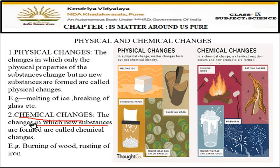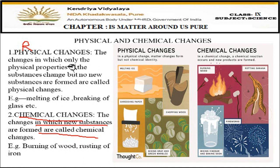Chemical changes are those in which a new substance is formed. Physical changes are generally reversible - we can get back the original substance. For example, melted ice can be frozen again. Chemical changes are not reversible; once a new substance is formed it is very difficult to get the original substance back.